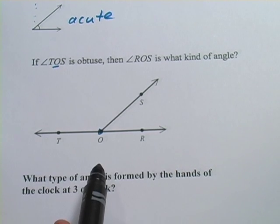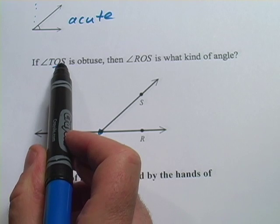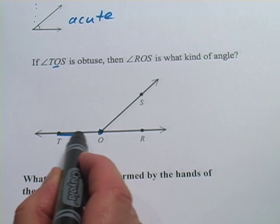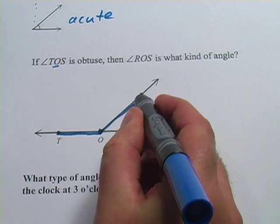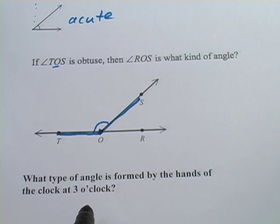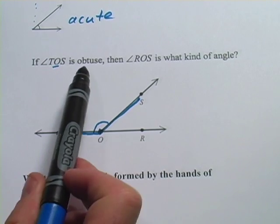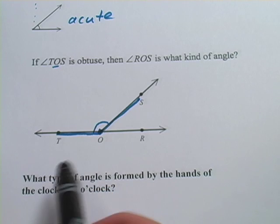There's O. And then we would start from T, go to O, and end up at S. So if I start from T, go to O, and end up at S, it's this angle right here. And it says if TOS is obtuse, and yeah, it looks obtuse to me.